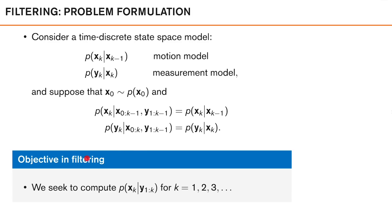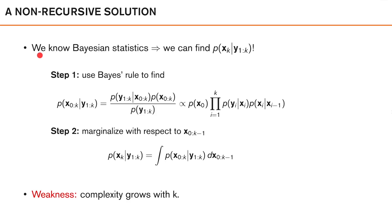In this setting the objective in filtering is to compute the so-called filtering density, which is the posterior density of xk given observations up to and including time k. Typically we want to do this for k equal to 1, 2, 3 and so on. In principle, as we know from Bayesian statistics, we can also find this posterior density. In a bit of a brute force approach we can find this filtering density in two steps.